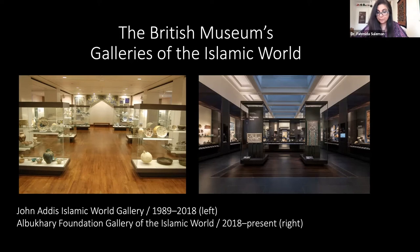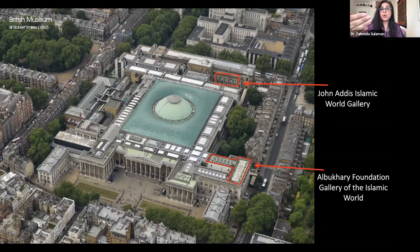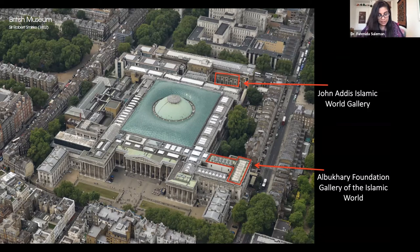The John Addis Gallery was isolated at the back of the museum, requiring quite a walk from the front colonnade. The new Al-Bukhari Foundation Gallery was brought all the way to the front, positioned between the medieval European galleries to the left and the Renaissance galleries to the right. This was really important, as moving the location helped show that the Islamic world was connected to other regions through exchange of ideas, peoples and cultures — it was part of world civilization and not just an anomaly of its own.